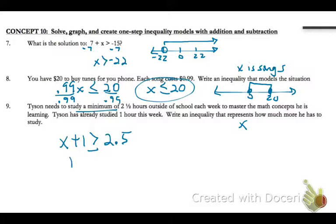So the time study minimum, so that means the minimum is two and a half. So this has to be greater than or equal to 2.5. And then we could just subtract that hour off, so since he's already studied an hour, he just has this week, needs to study at least an hour and a half.